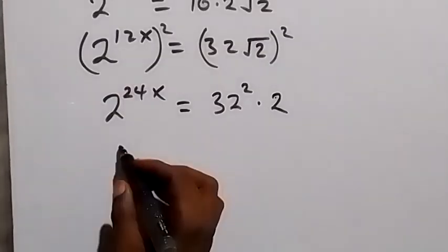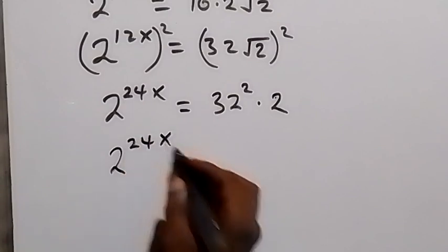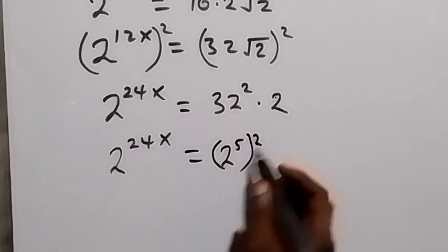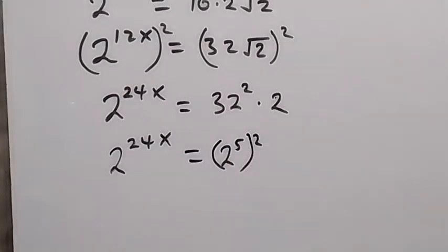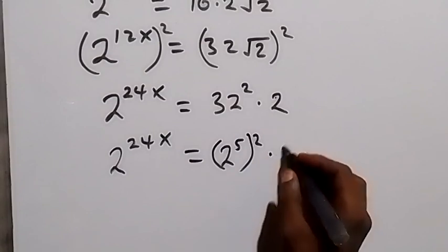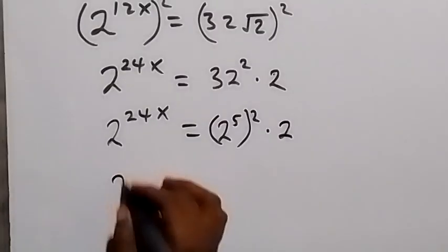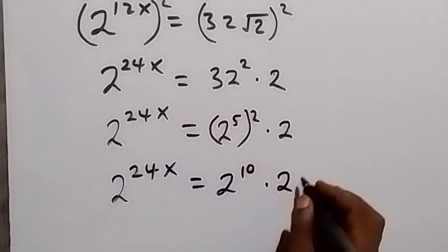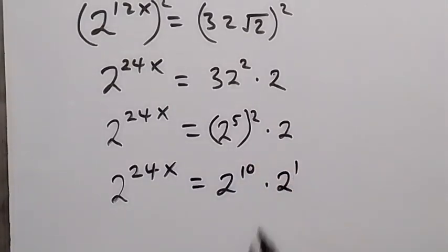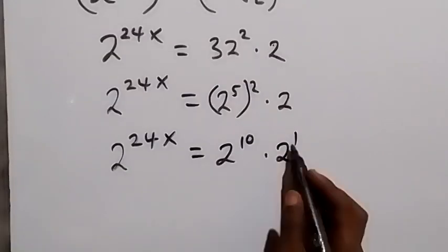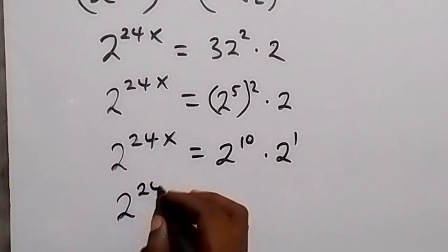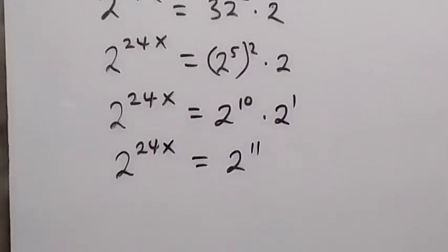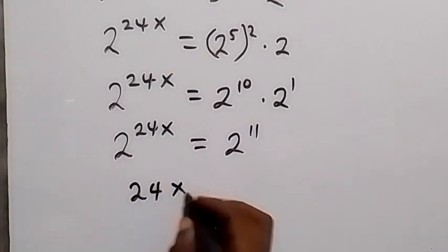So we have 2 raised to power 24x equals 32 squared times 2. Now 32 can be expressed as 2 raised to power 5, so 32 squared is 2 raised to power 10. Then times 2 raised to power 1. Applying the law of indices, we add the powers: 2 raised to power 24x equals 2 raised to power 11. Since the bases are equal, we equate the indices: 24x equals 11.